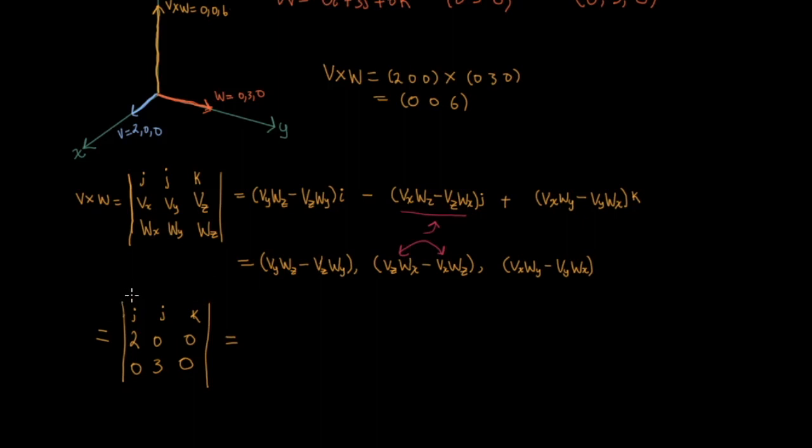So what we're going to do is put our numbers into the table and cross out the top row. Starting at the left column, we're going to work our way to the right. As you can see, the numbers that are not crossed out are the 0, 0 in the middle row and the 3, 0 on the bottom row. We're going to multiply the top left 0 by the bottom right 0, then subtract the top right 0 times the bottom left 3. In other words, we're going top left times bottom right minus top right times bottom left. That gives us our i term, which is our x coordinate.